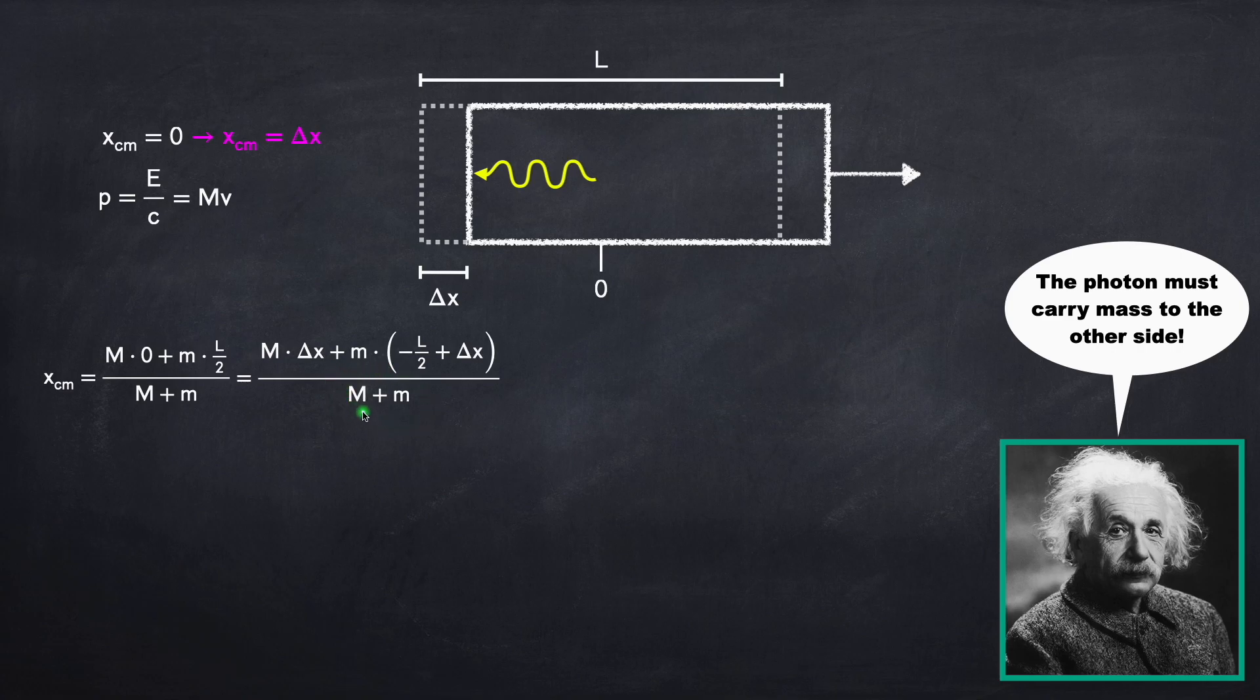Now what are we solving for? We're solving for little m, the mass of the photon. So I'm going to bring all the terms involving little m to the left side and the rest of the terms to the right side of the equation. Both sides of the equation have the same denominator, so they just cancel out.